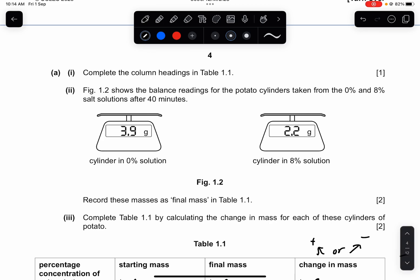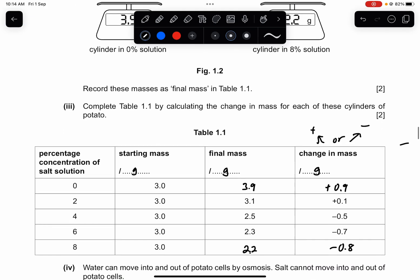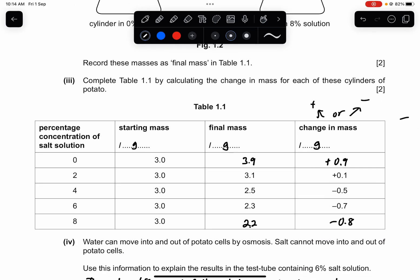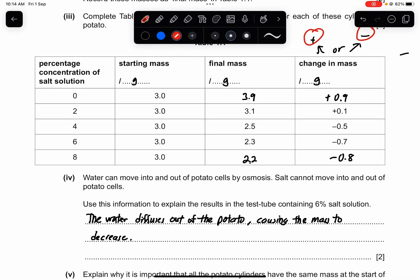Part A1 asks you to complete the column headings in table 1.1, and part 2 is asking you to read the measurements and record this in the table. Part 3 is to find the change of mass. Remember, change of mass is either going to be positive or negative. So gram, gram, gram, 3.9 and 2.2 with a positive difference of 0.9 and a negative 0.8. You need to know how to do starting mass and the final mass, but make sure it also makes sense with the sequence of the numbers here.